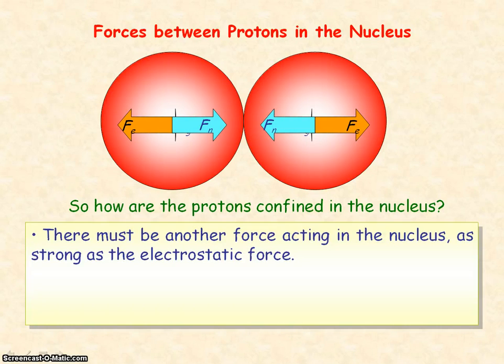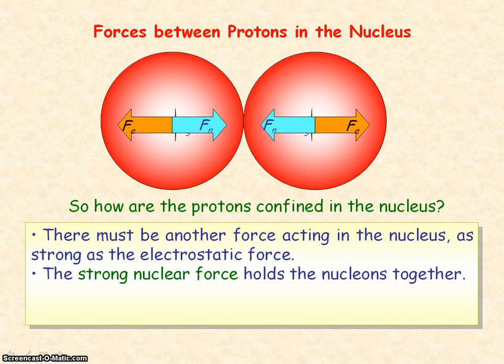Well, there must be another force acting in the nucleus which is as strong as the electrostatic force. But this force must be attractive in that it holds the protons together. And this force is known as the strong nuclear force. And this force actually holds all the nucleons together, so it acts equally between protons and neutrons.